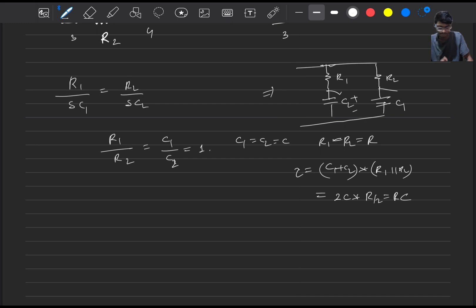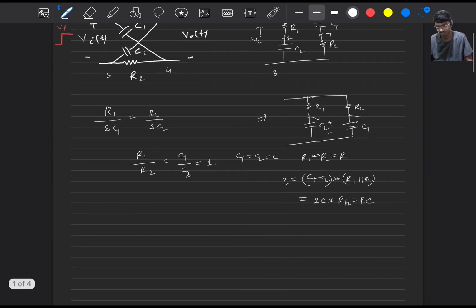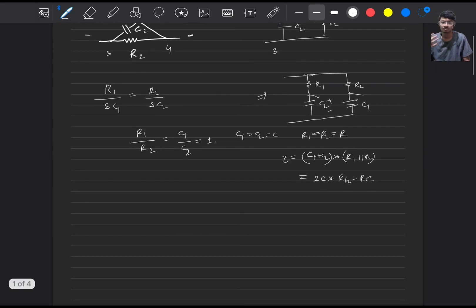In our case it will be 2C times R by 2 which is R times C. Now as we have found out the time constant, now we will focus on plotting the output voltage. So for plotting the output voltage we will just calculate the initial and final conditions of the circuit.